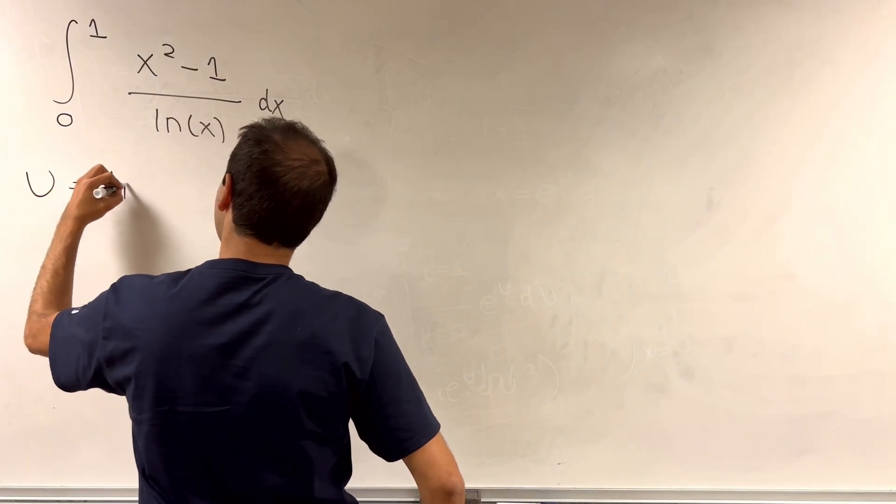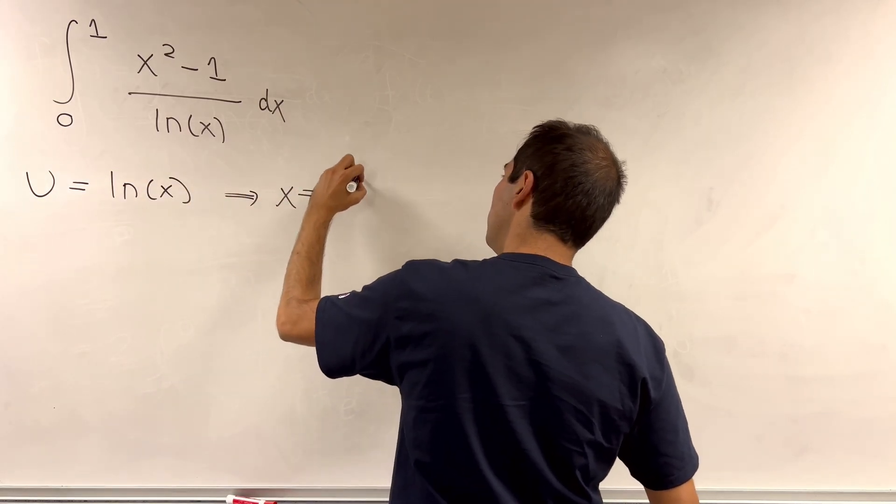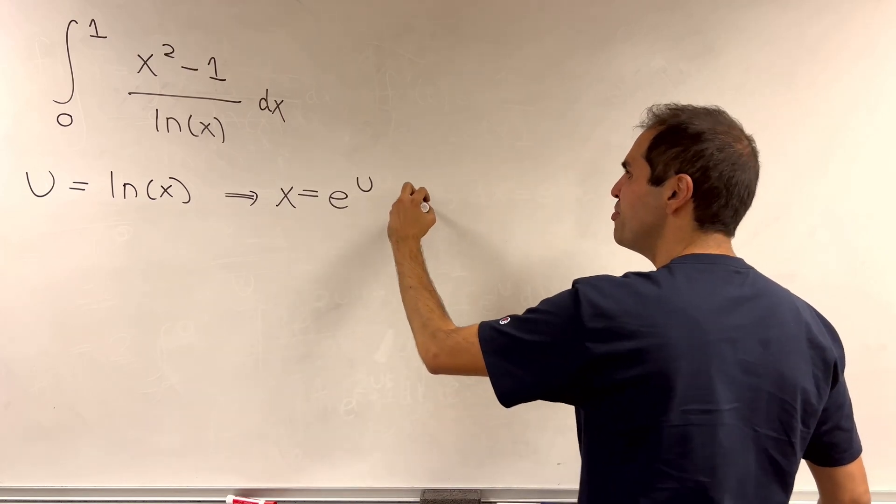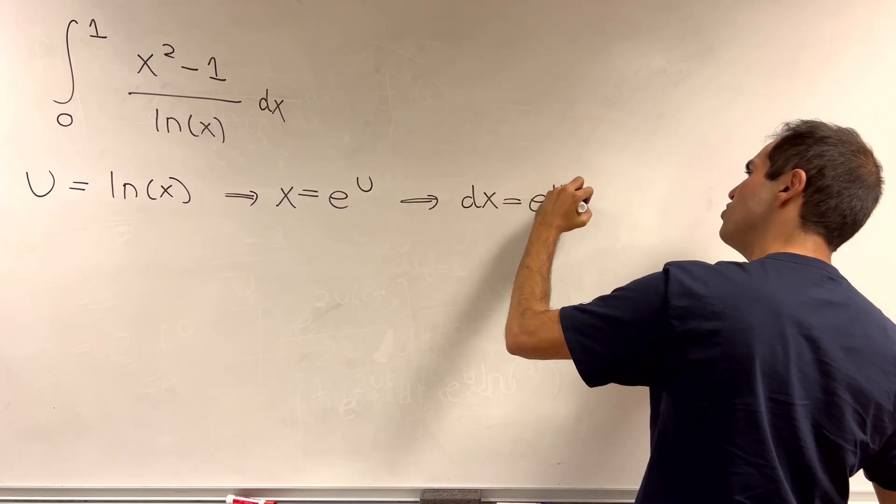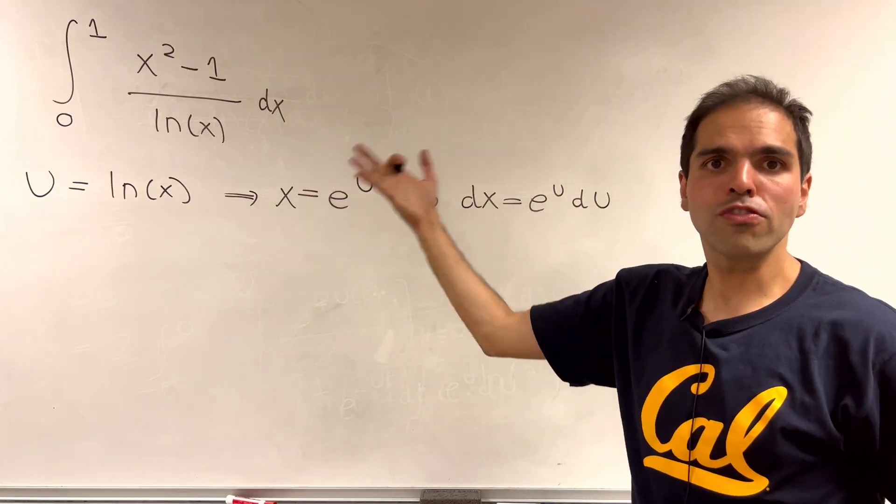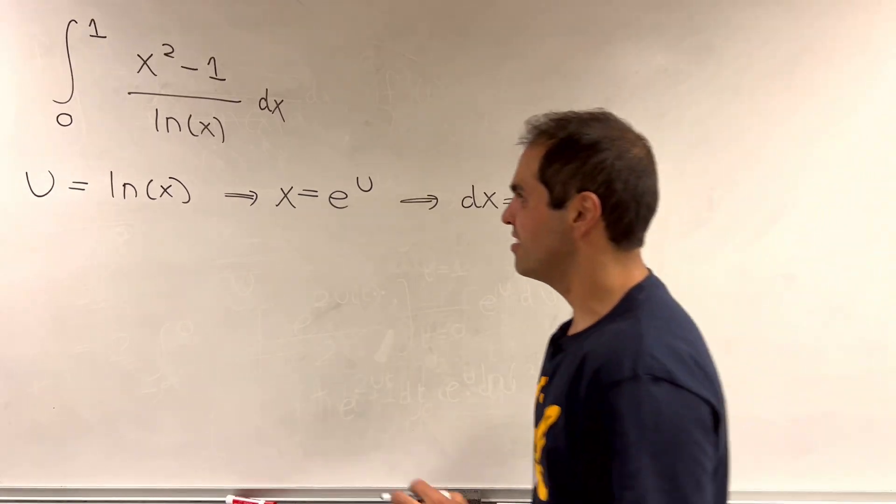Because let's just do it directly using a u substitution. So let u be ln of x. Then x is e of u, like the European Union. And then dx is e of u du. And moreover, u of 0 plus is minus infinity, u of 1 is 0.